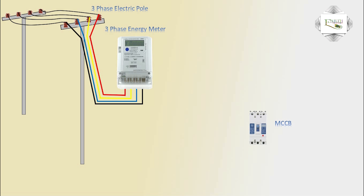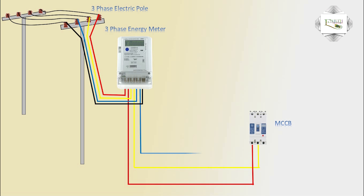MCCB — circuit breaker. Energy meter outlet phase rate connection to MCB. Red, yellow, blue connections to MCB. Neutral link bar. Energy meter outlet to link bar connection, MCB out connection to outgoing line.